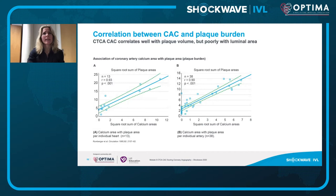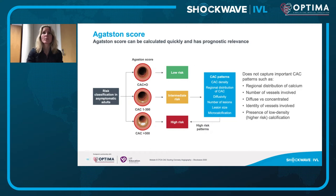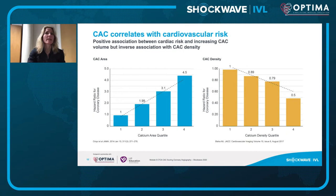From the calcium score, this patient is of increased cardiovascular risk, but it says nothing about needing any form of coronary intervention. The poor clinical utility of the calcium score is shown where there is a correlation with plaque volume but a poor correlation with luminal area. Using the Agatston score in risk stratification doesn't capture important high-risk patterns such as regional distribution, number of vessels involved, whether it's diffuse or concentrated, or the presence of high-risk low-density lesions.